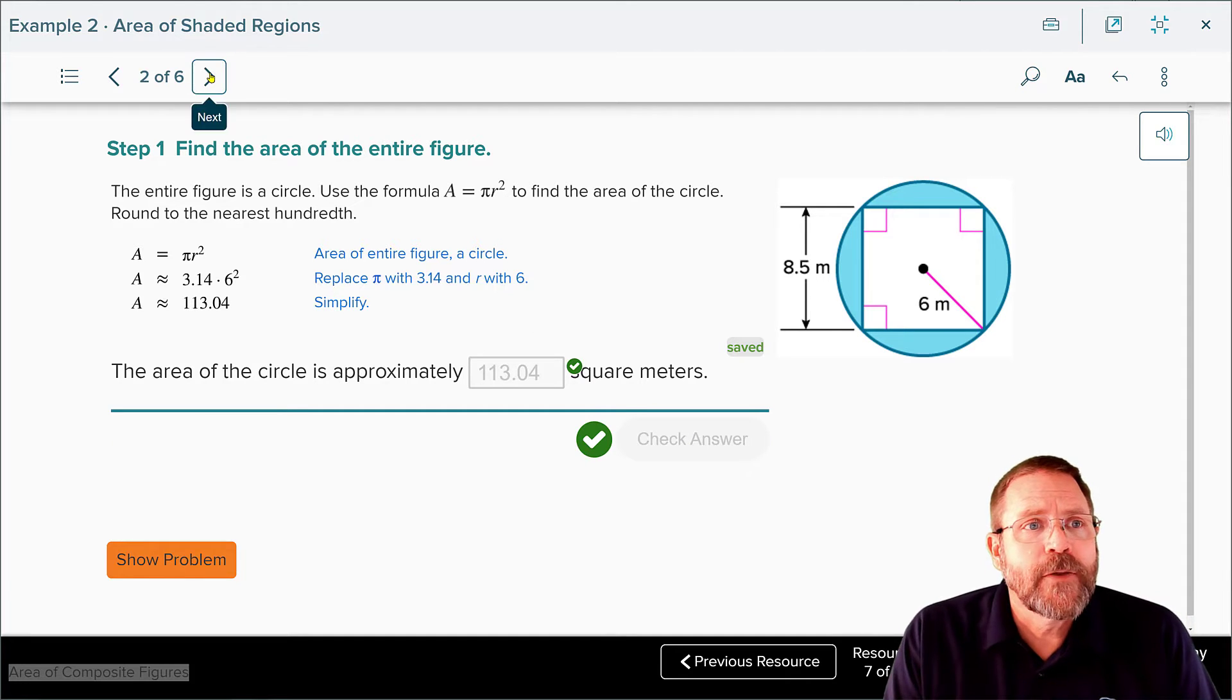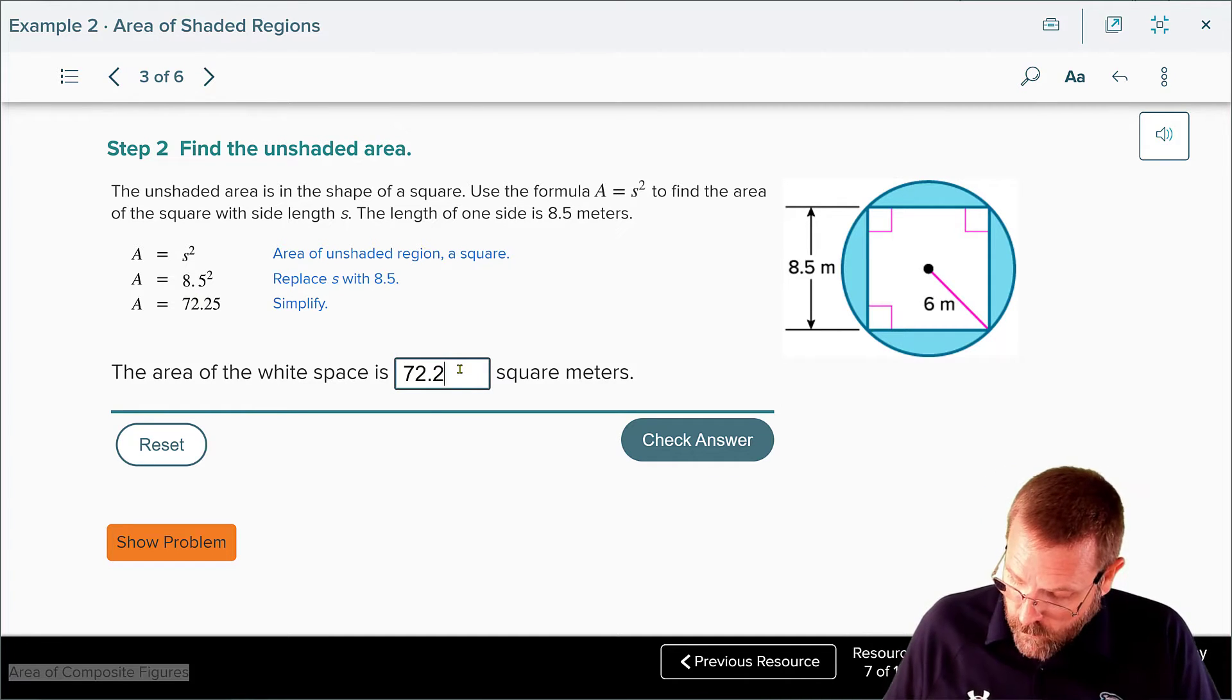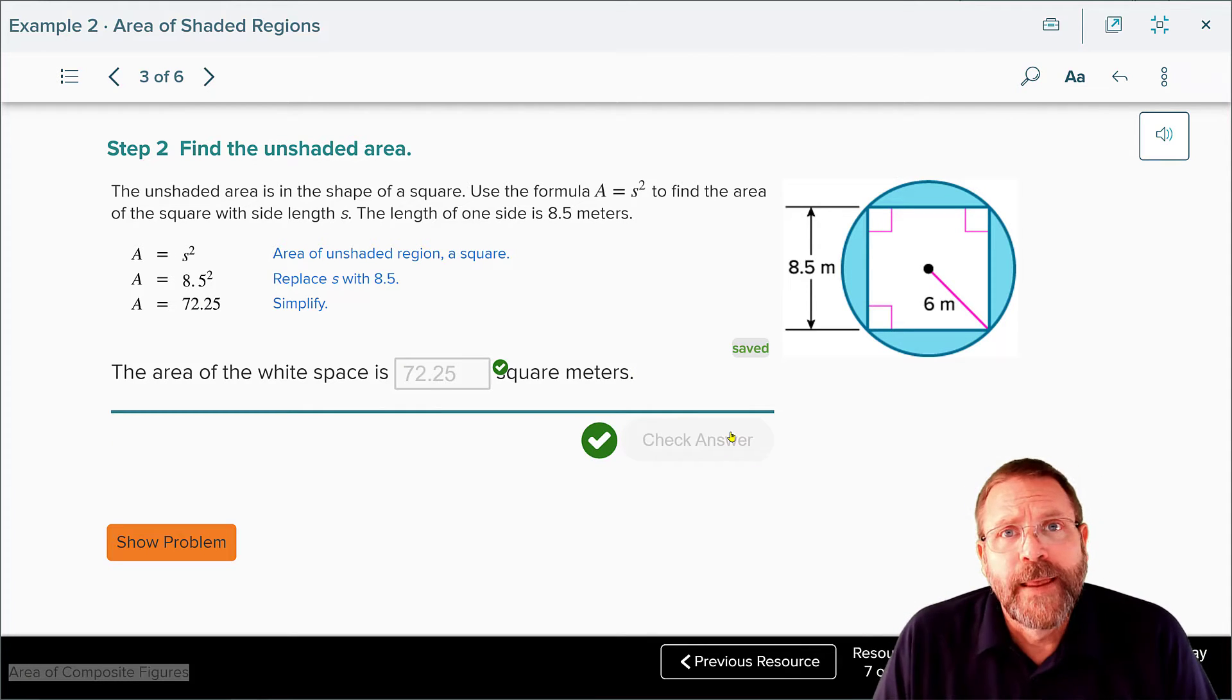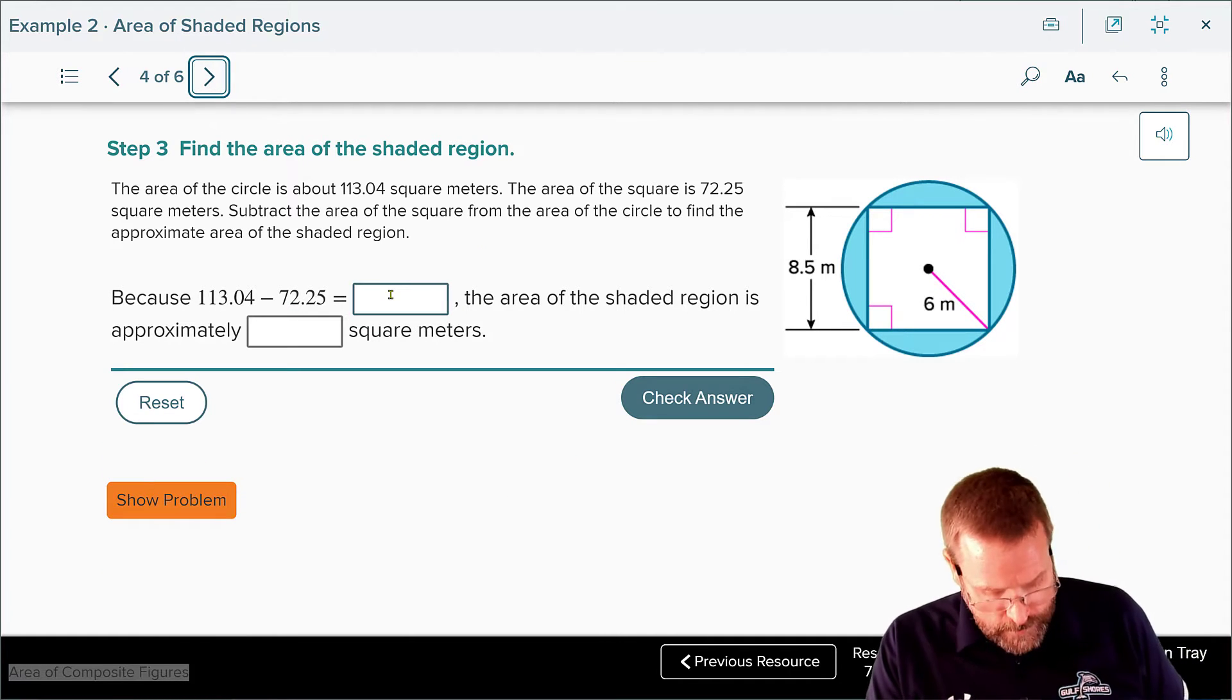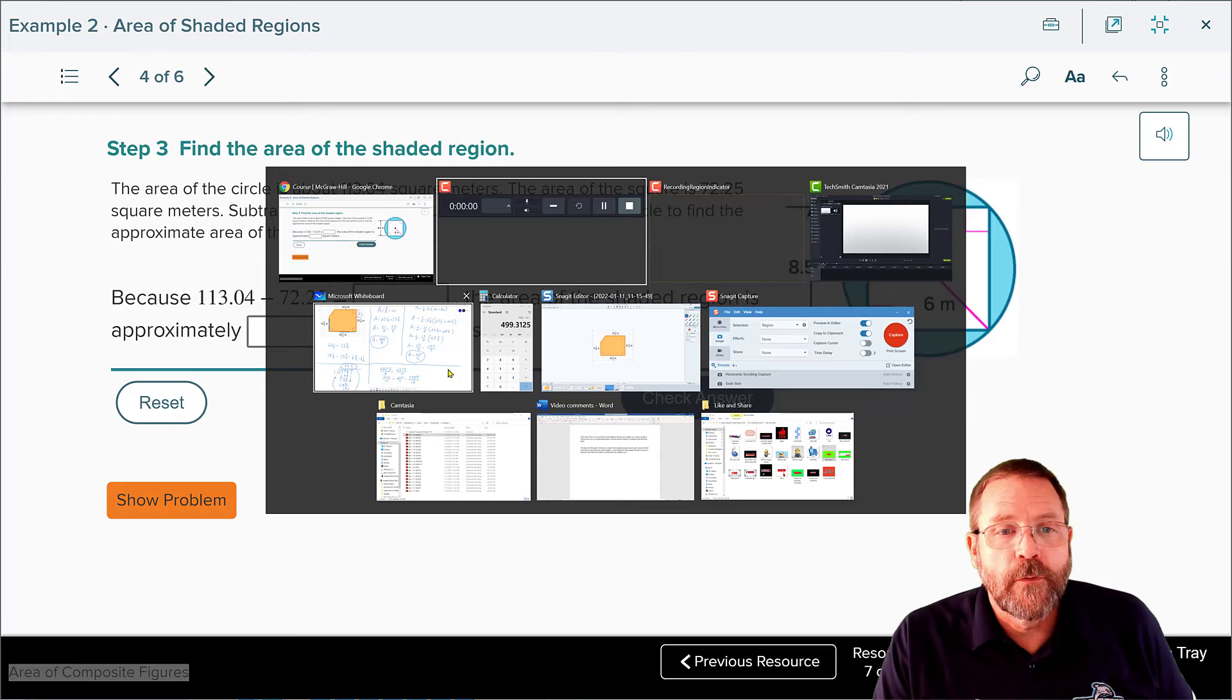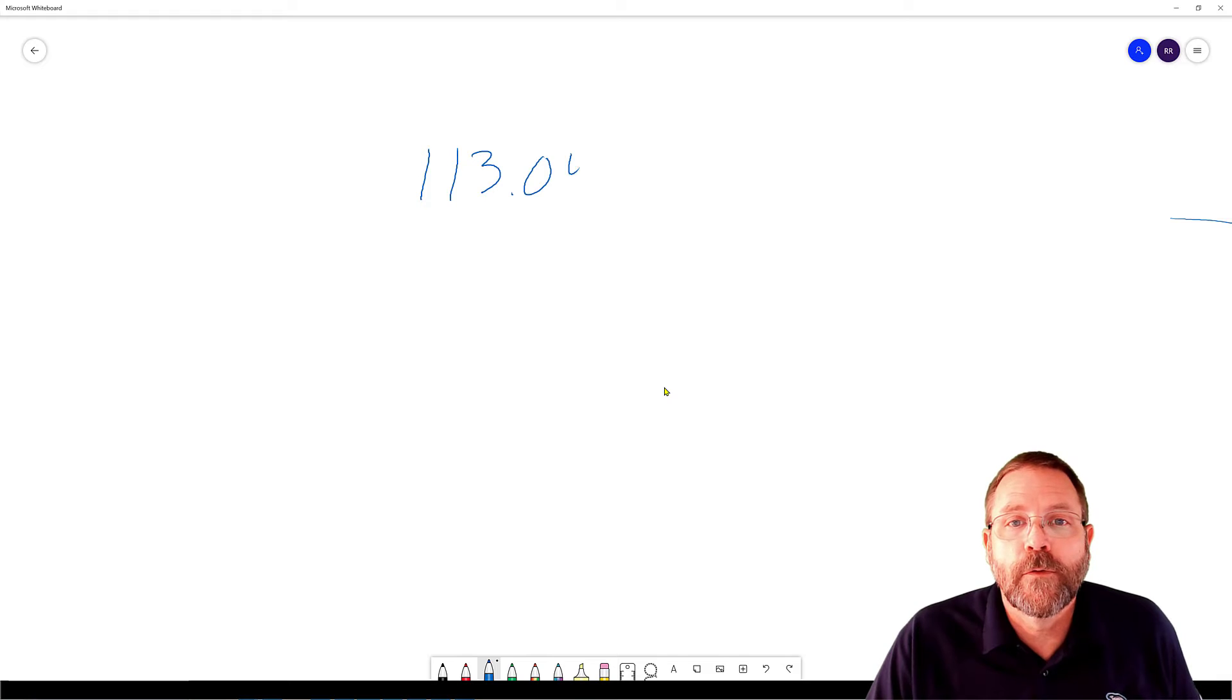Next, we're going to find the area of the square which was side times side or side squared. 8.5 squared gave them an area of the square of 72.25 meters squared. And now, all that's left to do is subtract those two numbers. So when we subtract them, we're going to get, let me work it. 113.04 minus 72.25.